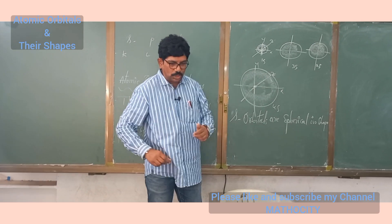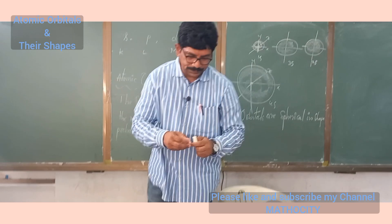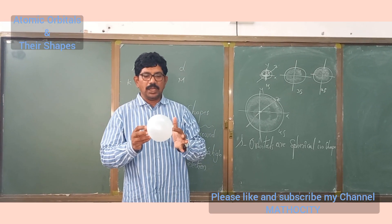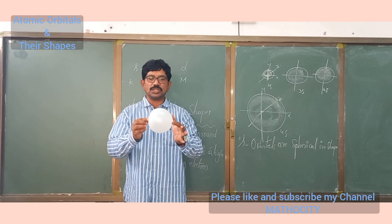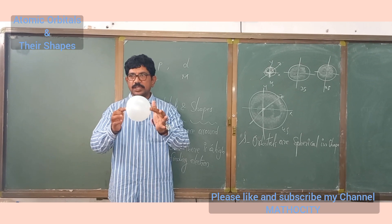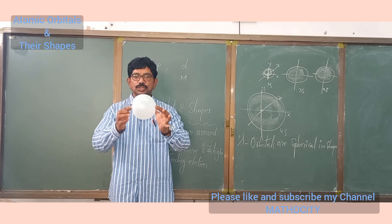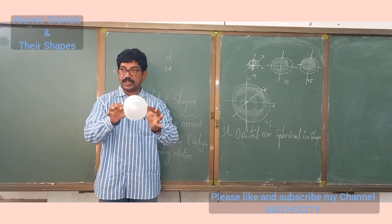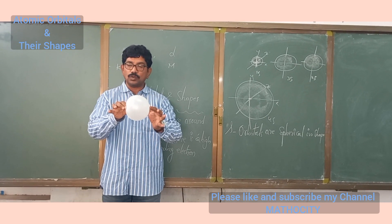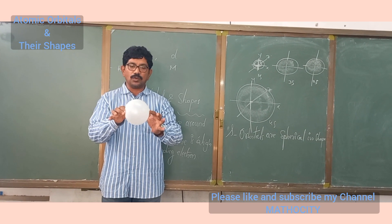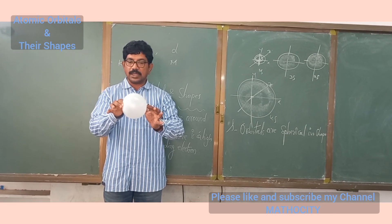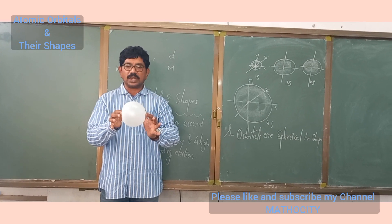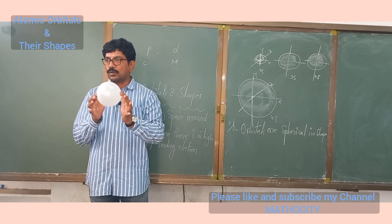I will show the shape with a balloon. Let us assume this is the 1S orbital. You will find the electron within the region inside, round the nucleus. There is the space, and within that region you will find the electron cloud.